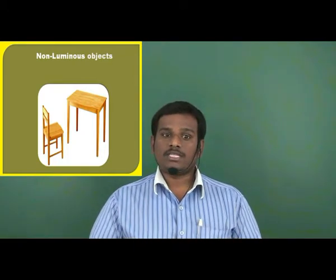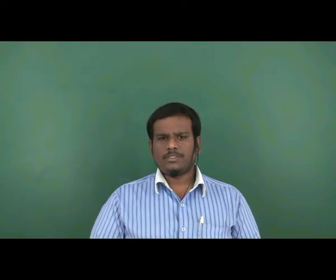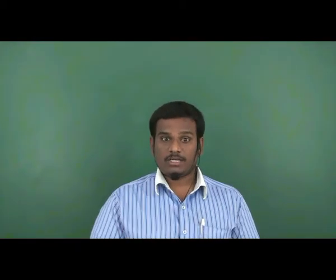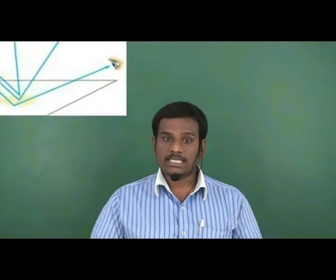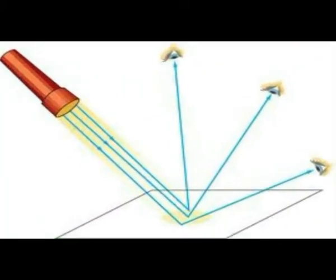Objects like a chair and table do not have light of their own, but even then we are able to see them due to the reflection of the light falling on them. These are called non-luminous objects. The word reflection means when light rays are incident on an object, they are returned back in the same medium.